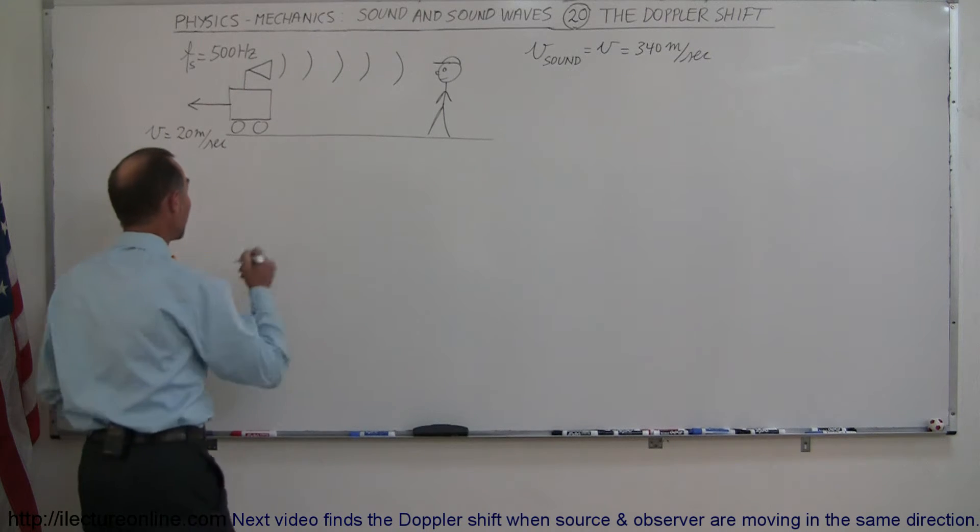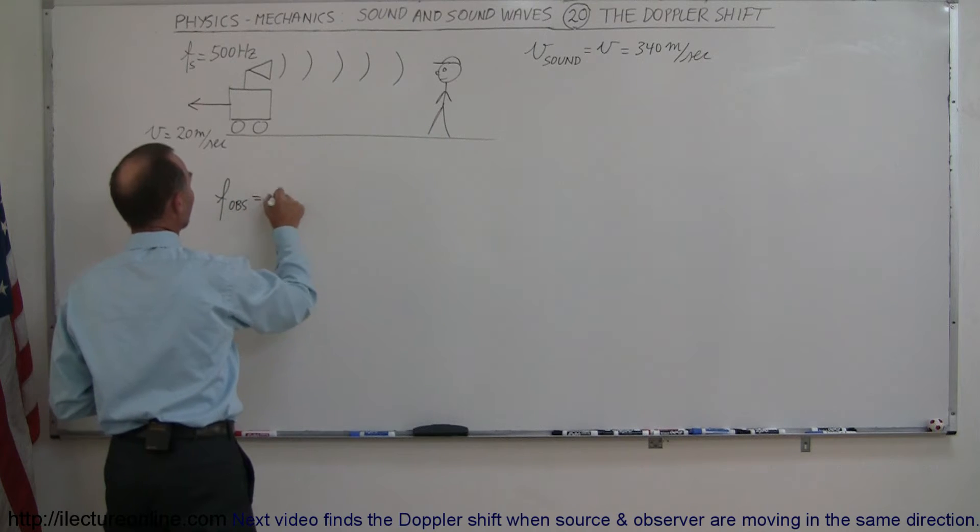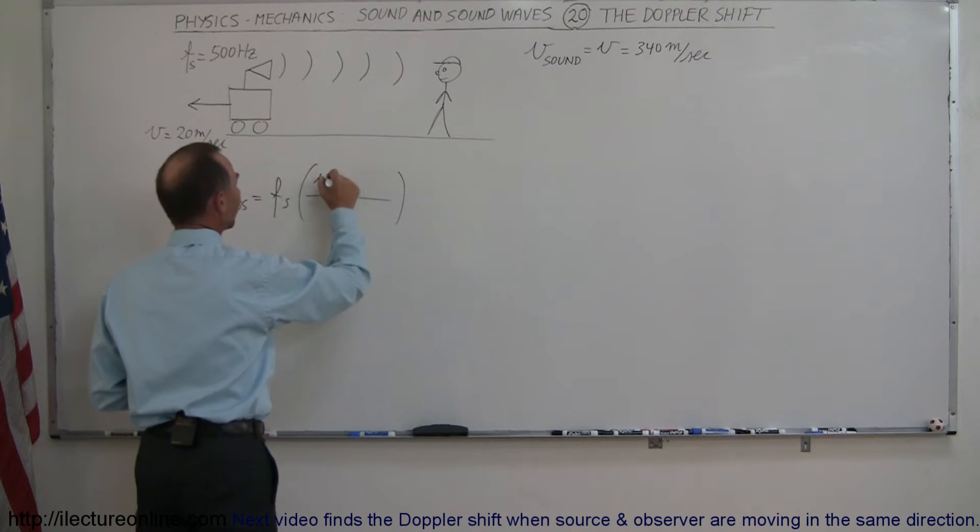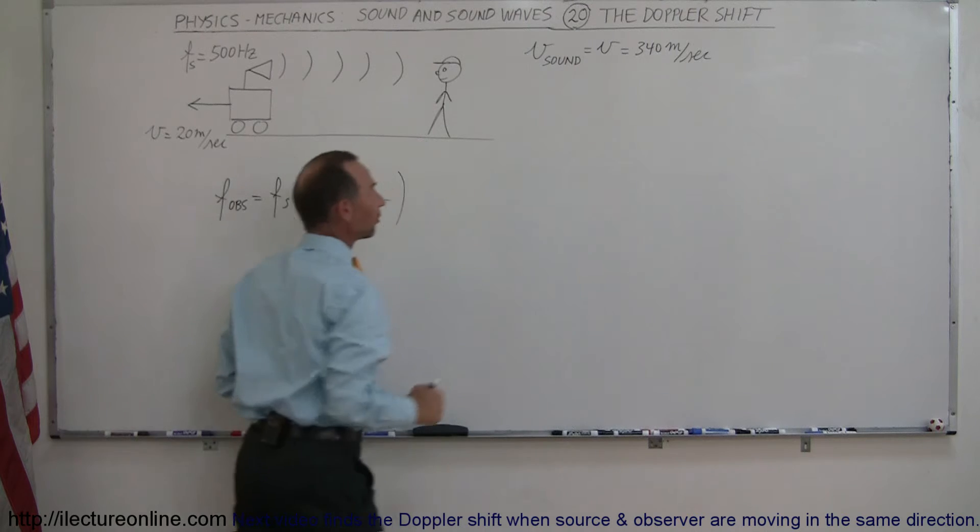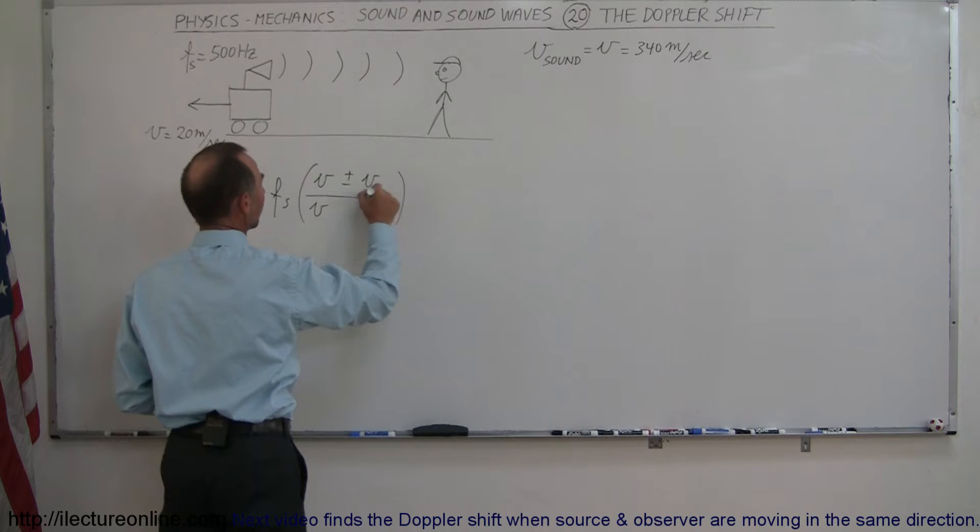Again, I recommend you use the same equation. The frequency observed equals the frequency of the source times this ratio, where you place the velocity of sound in air, which in this case would be 340 meters per second. It's going to be plus or minus the velocity of the observer, and here plus or minus the velocity of the source.